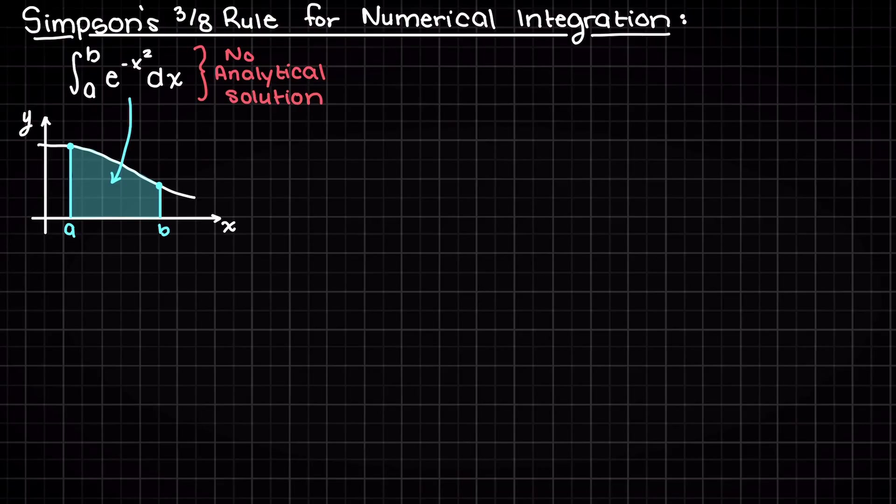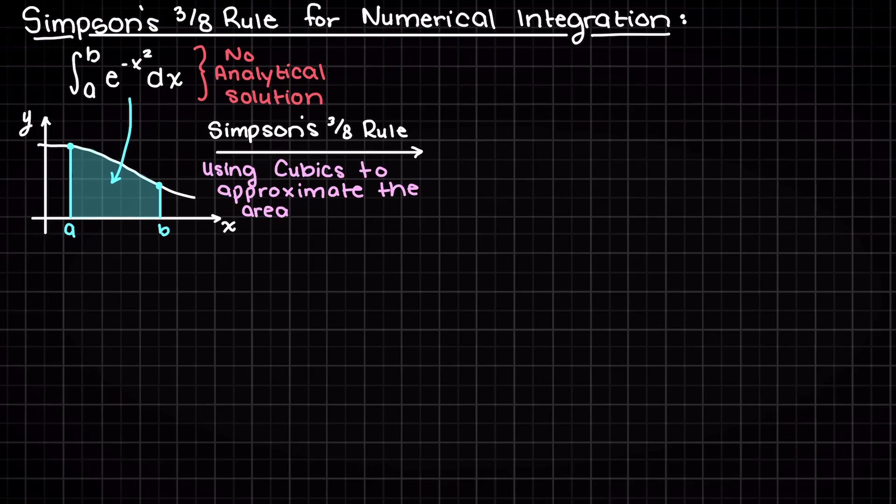Unlike Riemann's sums and the trapezoid rule, Simpson's rule uses higher order polynomials to estimate the area under our curve. More specifically, Simpson's 1/3 rule, which we talked about in a previous video, uses parabolas, which are a second order polynomial.